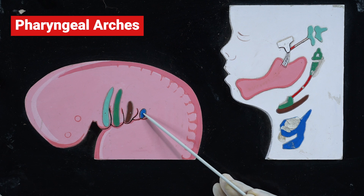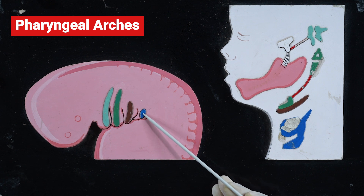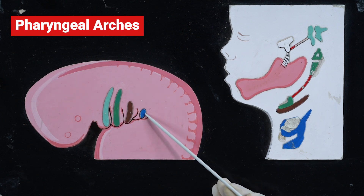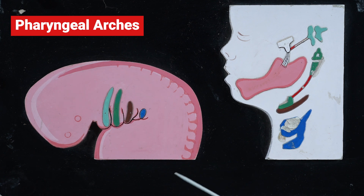The muscle of the fourth arch is cricothyroid, innervated by the external laryngeal branch of the superior laryngeal nerve, which is in turn a branch of the vagus nerve. The muscles derived from the sixth arch include all intrinsic muscles of the larynx, which are innervated by the recurrent laryngeal nerve.